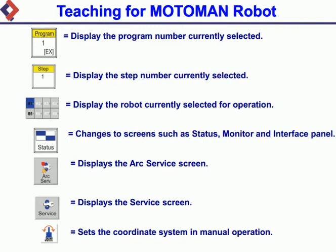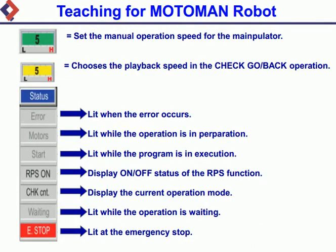Sets the manual operation speed for the manipulator. Chooses the playback speed in the Check Go/Back operation. Lit when an error occurs. Lit while the operation is in preparation. Lit while the program is in execution. Displays on/off status of the RP's function. Displays the current operation mode. Lit while the operation is waiting. Lit at emergency stop.